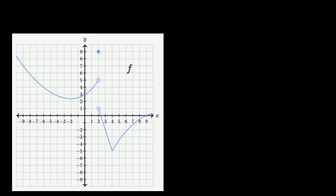If we ask ourselves what is the value of our function approaching as we approach x equals 2 from values less than x equals 2, as we imagine x equals 1, x equals 1.5, x equals 1.9, x equals 1.999, x equals 1.9999999 — what is f of x approaching? We see that f of x seems to be approaching this value right over here. It seems to be approaching 5.